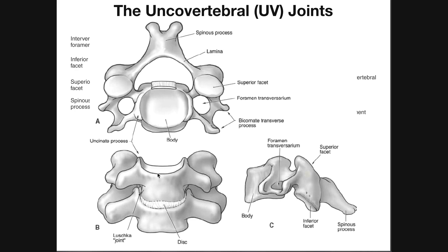Starting at the medial aspect of the vertebral body and going laterally on either side, it appears to rise up and terminate with these vampire-teeth-looking structures — the uncinate processes. We have an uncinate process on the patient's left and one on the patient's right in cervical vertebrae C3 through C7.